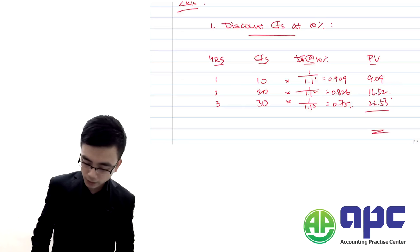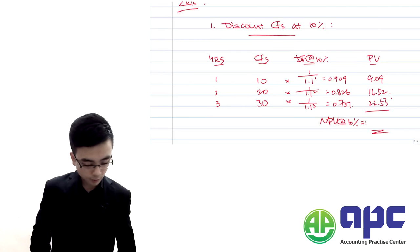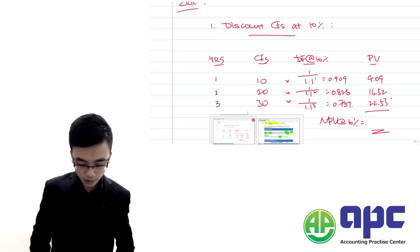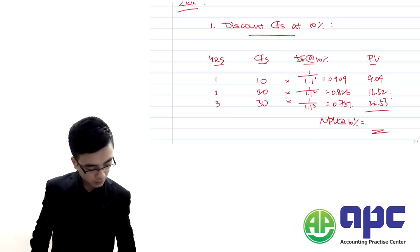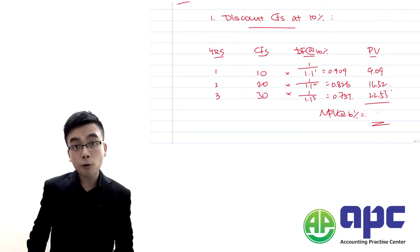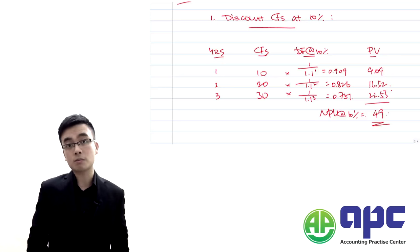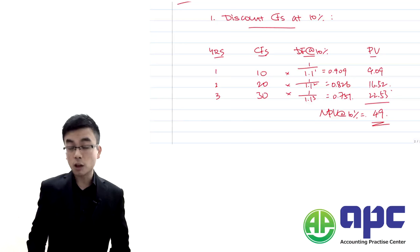We simply add them up together: 22.53 + 16.52 + 9.09, which gives approximately 48 to 49. I'm going to use 49 — rounding difference, entirely up to you.